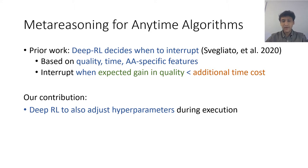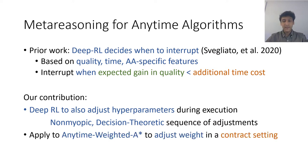Our contribution in this work is to extend deep RL to also adjust hyperparameters during execution. Our approach is non-myopic and decision theoretic which means that it considers the long term effects of changing those hyperparameters. Then we apply our approach to Anytime Weighted A star to adjust its weight in a contract setting, i.e. when there is a deadline to solve a search problem. It means that the cost of time is zero before the deadline and it is infinite after the deadline.